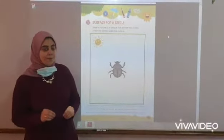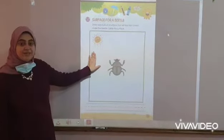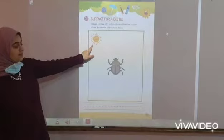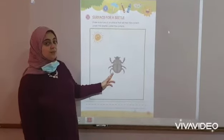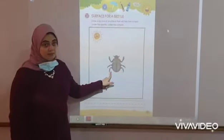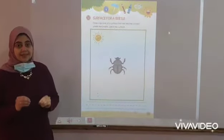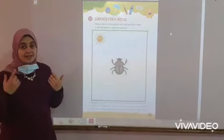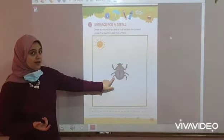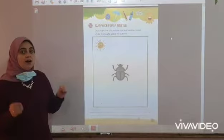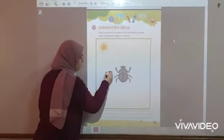Now please open page number 23 and look at this picture. What can you see here? I can see the sun. And what else? I can see a beetle. This beetle needs something to protect it from the sun. Try to guess — what will we draw here to protect it from the sun? I will draw a tree here.